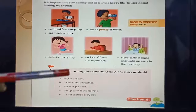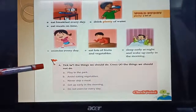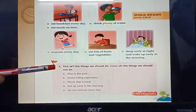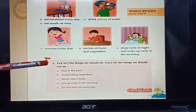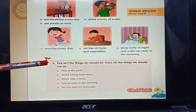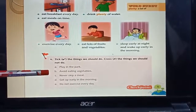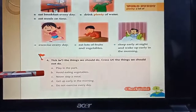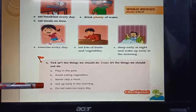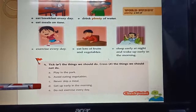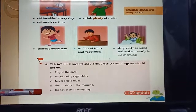Now let's discuss the checkpoint. Students, I will read the question first. Tick the things we should do and cross the things we should not do. A: play in the park. B: avoid eating vegetables. C: never skip a meal. D: get up early in the morning. E: do not exercise every day.